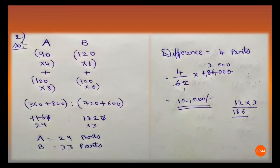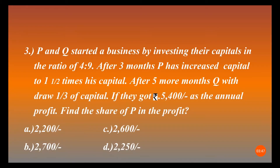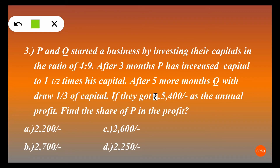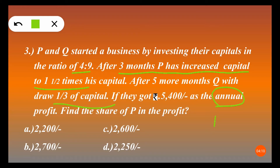Now let's move to the third and final question. P and Q started a business by investing their capitals in the ratio 4 to 9. After three months, P increased his capital to one and a half times. After five more months, Q withdrew one-third of his capital. If they got 5,400 rupees as the annual profit — annual profit means 12 months — find the share of P in the profit.